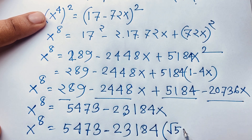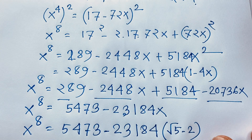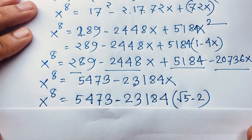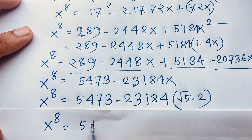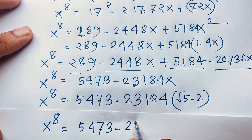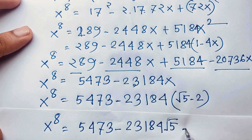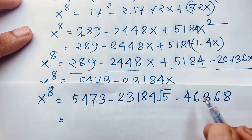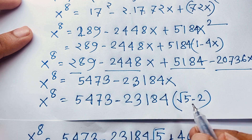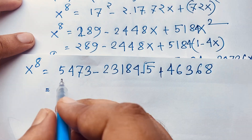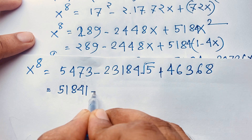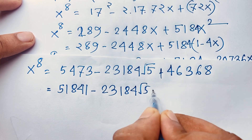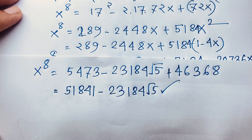Now recall x = √5 − 2, so x^8 = 5473 − 23184(√5 − 2) = 5473 − 23184√5 + 46368. Adding: 5473 + 46368 = 51841. So our final answer is 51841 − 23184√5. Thank you all — if you enjoyed this math Olympiad question, please subscribe to our channel for other interesting videos. Goodbye, take care!